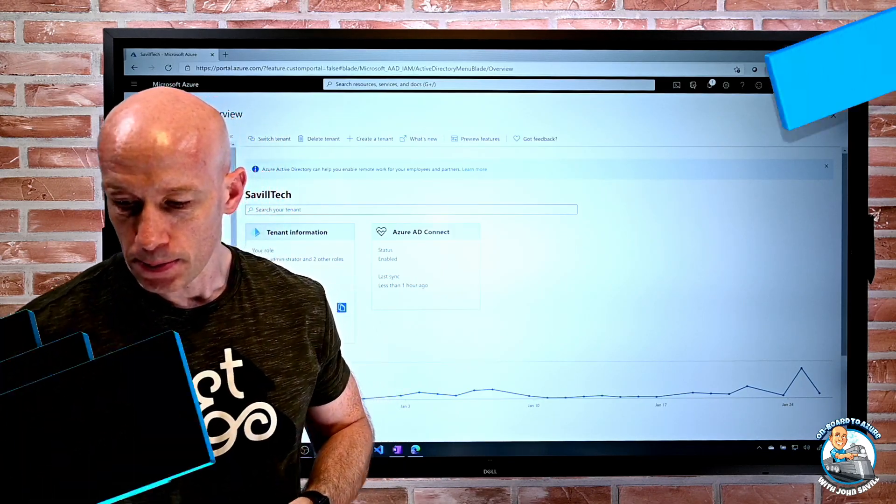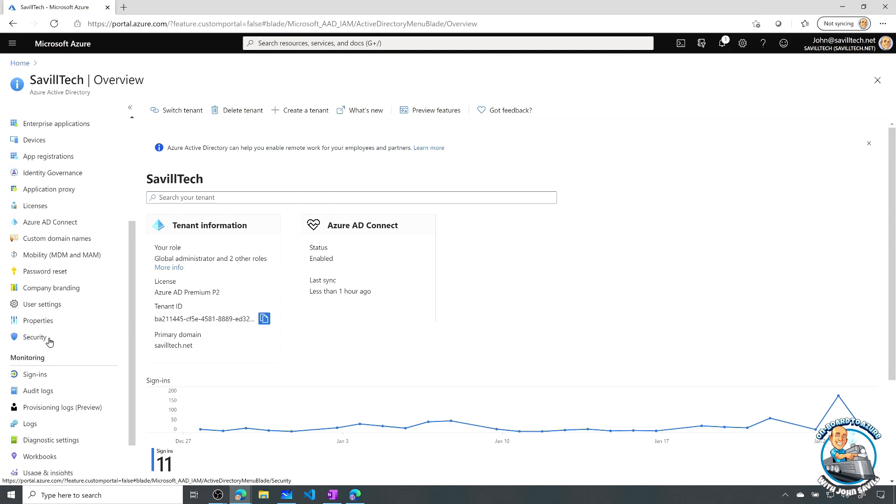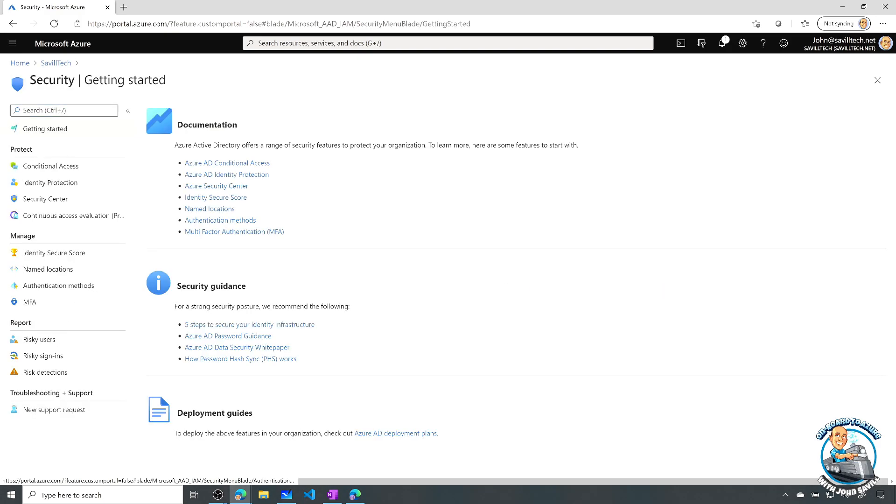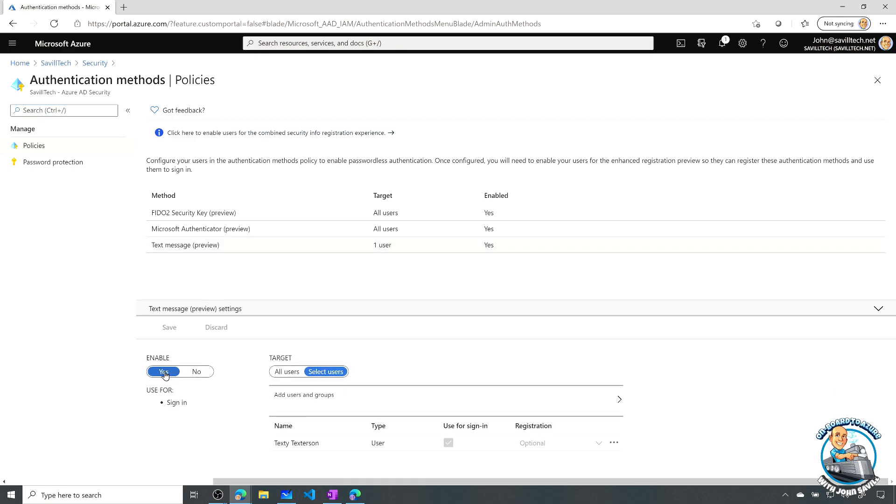We actually have to enable this. So if I jump over to my Azure AD tenant which is what you can see here, if I go down to my security option, if I select that what we can see is we have our authentication methods. So I'm going to select this and what I've turned on is this text message. Now right now you can see it's in preview. And I've enabled it only for one user. I've enabled it for a user called Texty Texterson. Obviously a very real user. But I've gone ahead and enabled it for that user.